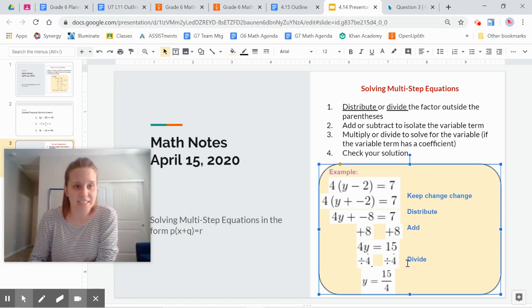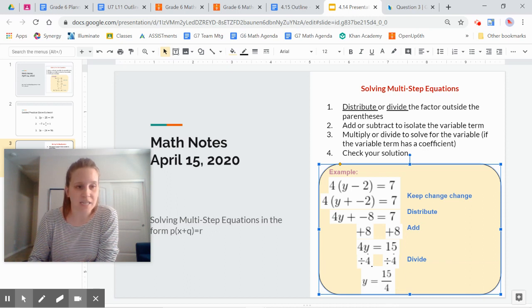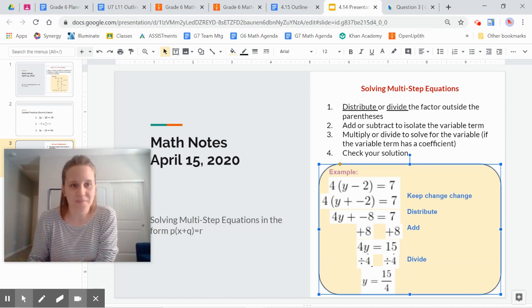Then I decided to divide by 4, because that's the inverse operation of this multiplication that's happening to y. And I got y equals 15 fourths. Could have written it as a mixed number, could have written it as a decimal, or like this, an improper fraction.